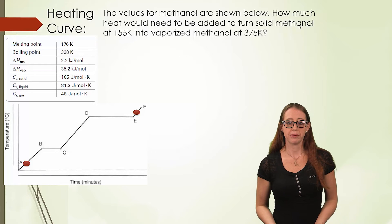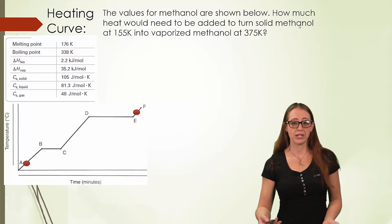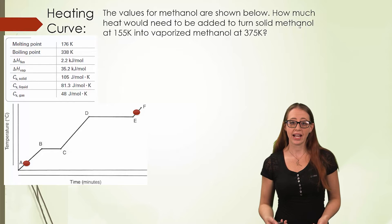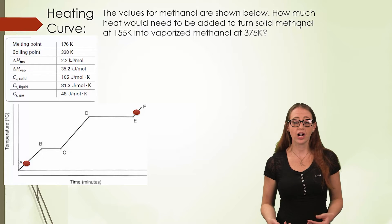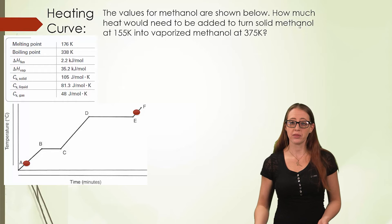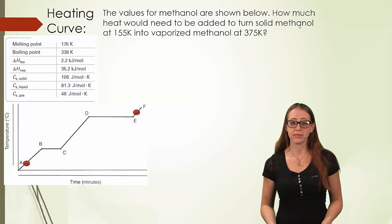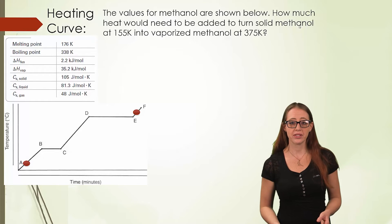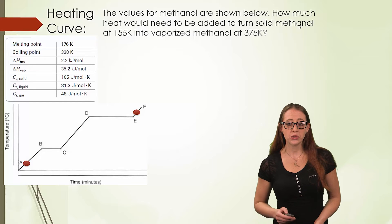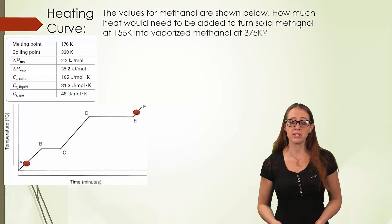Let's look at the longest type of example, going from a solid all the way to a gas. Here, I ask you to heat methanol at 155 Kelvin up to 375 Kelvin. If I hadn't told you that this was from a solid to a gas, you could see that we start below its melting point and go above its boiling point, based on the table values I gave you.